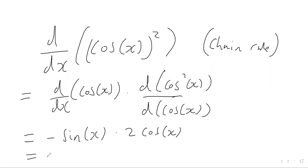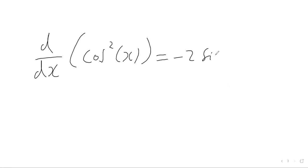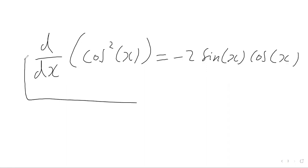And we can simplify this: we're going to get negative two sine x times cos x. So that's the final answer. When you differentiate cos squared of x with respect to x, we get negative two sine x times cos x.